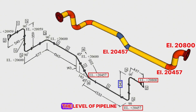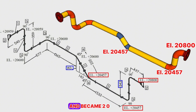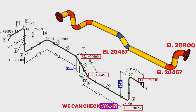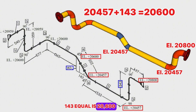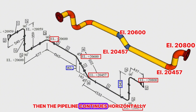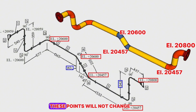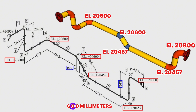Then the level of the pipeline rose 143 millimeters vertically and became 20,600 millimeters. We can check again: 20,457 plus 143 equals 20,600 millimeters. The pipeline then continues horizontally, so the elevation at these points will not change — it remains 20,600 millimeters.